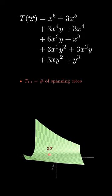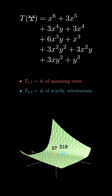x1y1 counts the number of spanning trees, x2y0 counts the number of acyclic orientations, and much more.